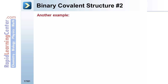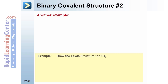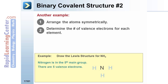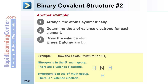Here's another example. Arrange the atoms symmetrically. Determine the number of valence electrons: five for nitrogen, one for hydrogen. Draw the valence electrons, making sure you don't double up where a bond is going to form.